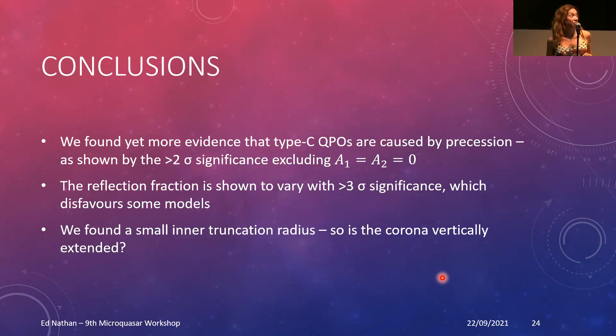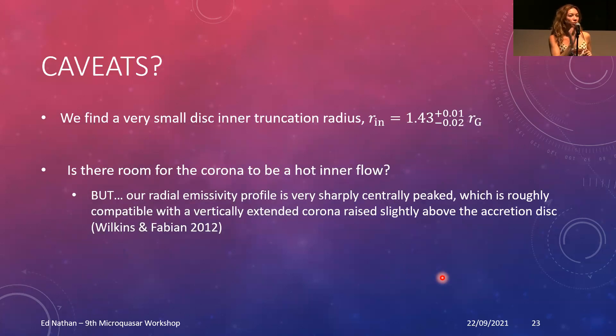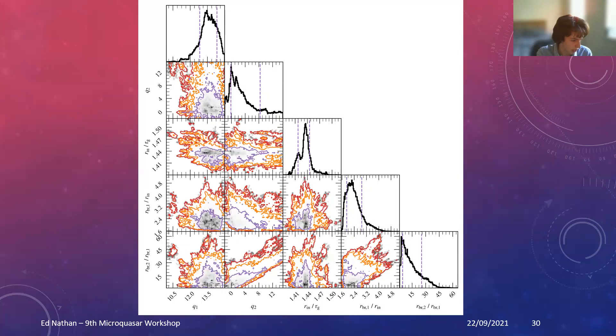We'll go to the room first. It's Barbara De Marco here. I noticed that your errors on the inner radius are really, really small. So I was wondering what it is due to, like you have very good data or is it just the technique that you use that makes the error so small?